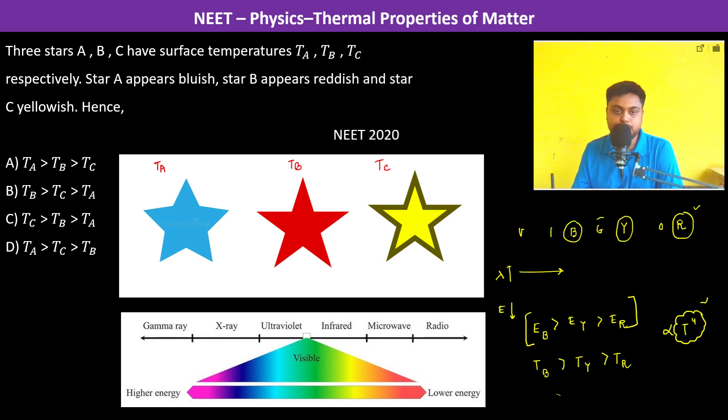Thus we have the option. Now blue is TA, yellow is TC, and red is TB. So TA, TC, TB means D is going to be the answer. Thank you.